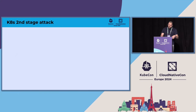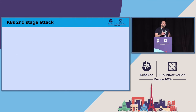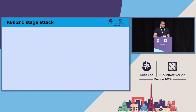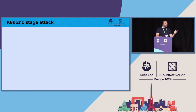Before we dive in, we need to understand what exactly a second-stage attack in Kubernetes is. Of course, an attacker first gains some initial access to our environment and then wants to escalate privileges or move laterally. Our starting point is that container escape has already happened. So how exactly do we make sure our environment is protected and strong enough that even if container escape happens, an attacker cannot do any significant damage? Let's think as an attacker about what we will focus on in this second-stage attack.